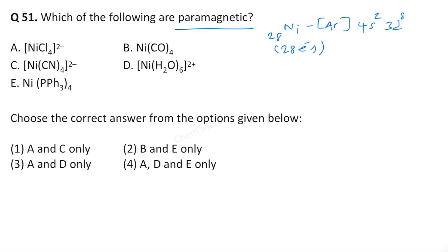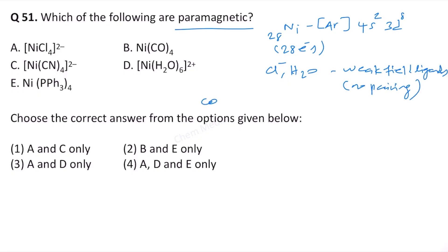Among the ligands, chlorine as well as water are weak field ligands — this means that no pairing will occur. Whereas carbonyl, cyanide, and triphenylphosphine are all strong field ligands, meaning that when considering the hybridization and bonding in these scenarios, we need to think about pairing of electrons.